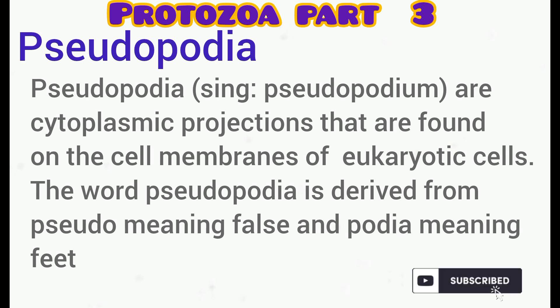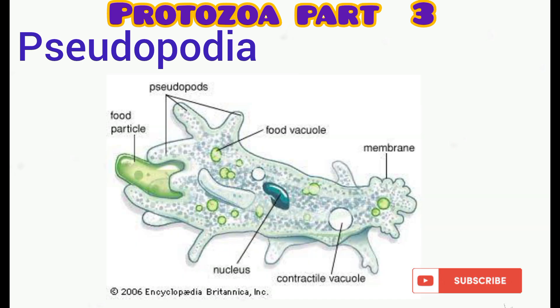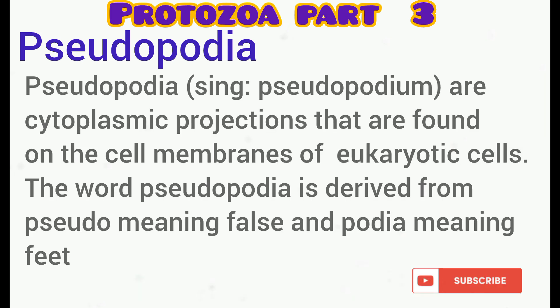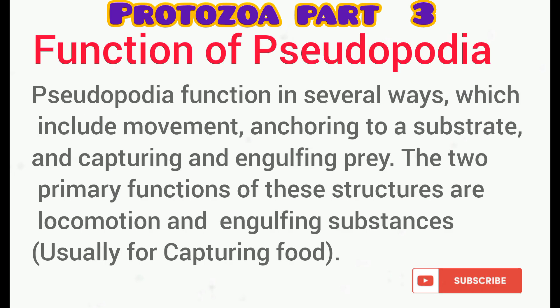In amoeboid organisms, pseudopodia consist of a projection of the cytoplasm from one or two places, and the other body parts eventually move forward along this projection. The functions of pseudopodia include movement or locomotion, capturing and engulfing food, and in some cases anchoring to substrates.